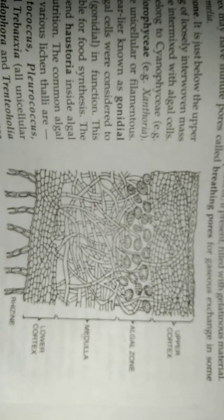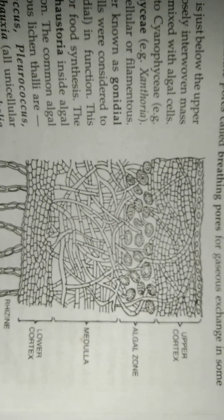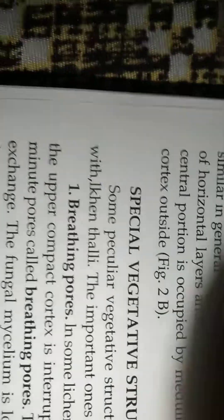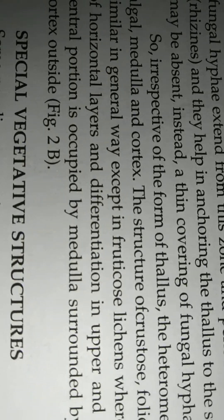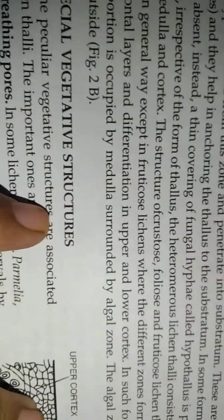This is about the heteromerous type of lichen. These both are very important. So, irrespective of the form of thallus, heteromerous lichen thalli consists of three regions.